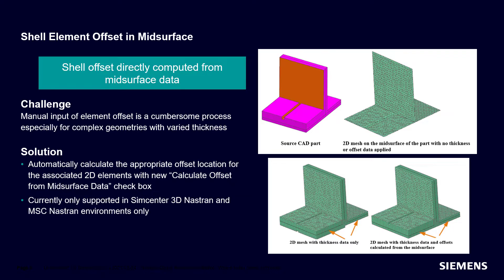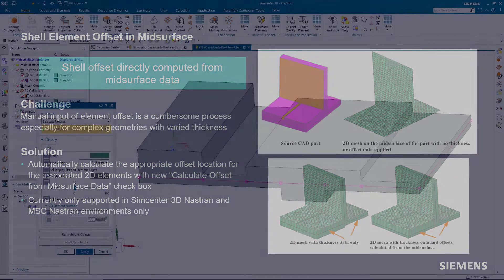Simcenter 3D version 2206 and later can compute shell offsets from mid-surface data without having to manually specify a Z offset. The 'Calculate Offset from Mid-Surface Data' checkbox in the mesh associated data dialog will automatically calculate the appropriate offset for the associated 2D elements.